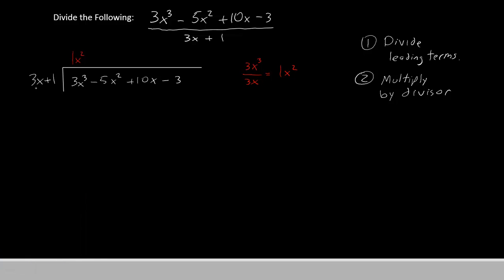So we'll do 1 times 3 is 3, and x squared times x is x to the third. Now the next term: 1 times 1 is 1, x squared times no x at all is still x squared.